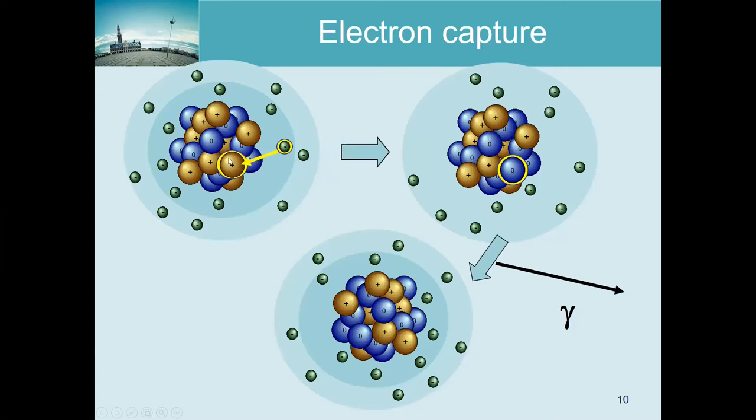And another way, or another problem of a nucleus can be that it has actually too many protons, and then it can do the opposite thing. It now wants to convert this proton to a neutron. And it can do that by eating up an electron, which is called electron capture. And then again, there will be either an isomeric transition or an immediate transition reorganizing this nucleus, and a photon is emitted, which is the photon that we would like to use.